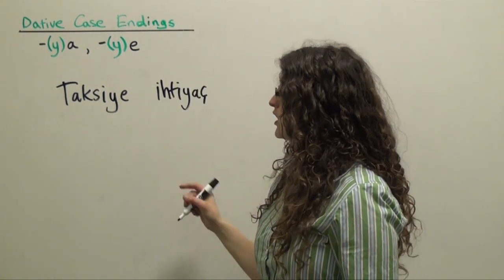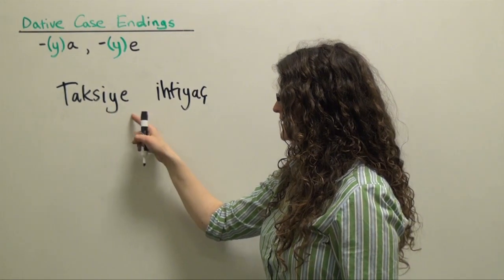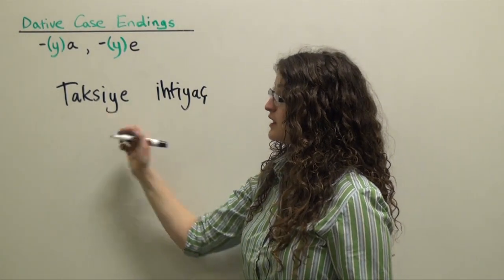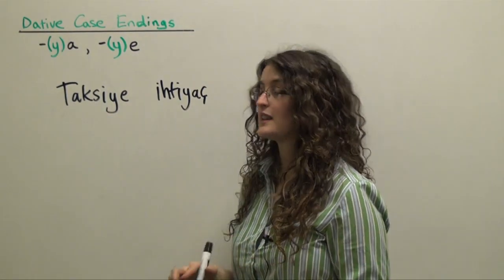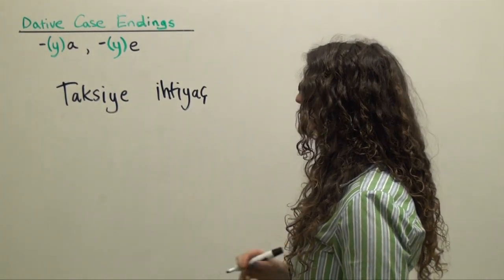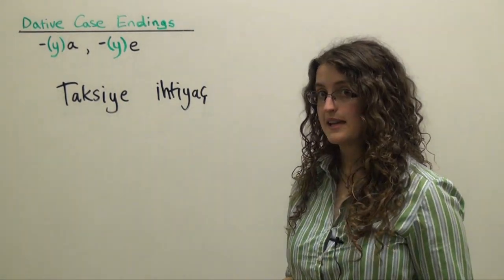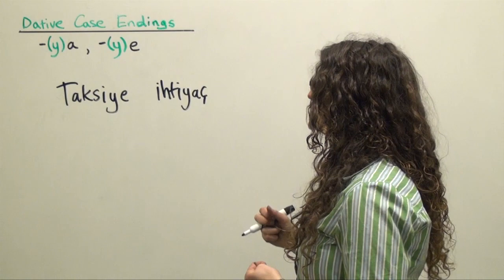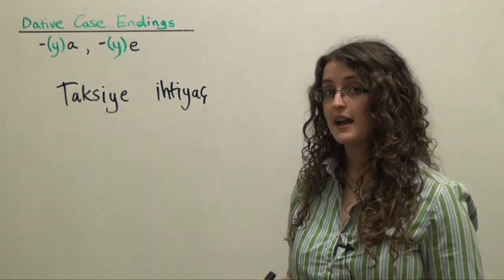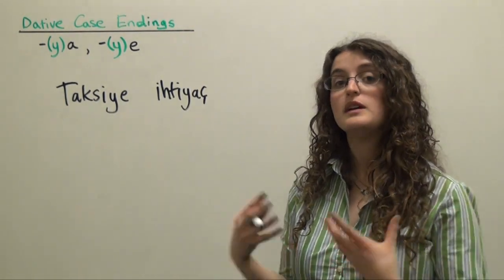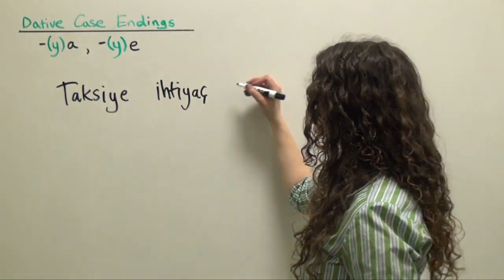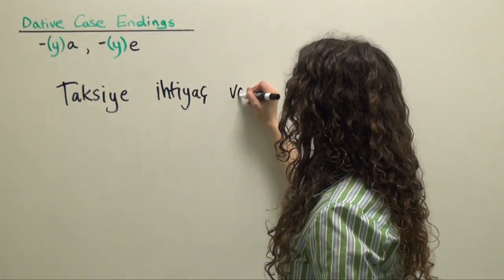For a taxi — a need — a need for a taxi. The needed thing is in the dative case. We want to say 'there is a need for a taxi,' so we're going to use the Turkish word 'var,' meaning 'there is,' 'there are,' or 'exists.' So: 'taksiye ihtiyaç var.'